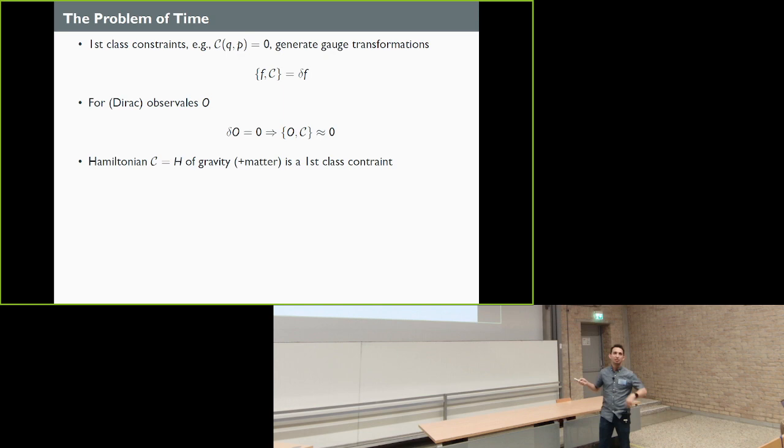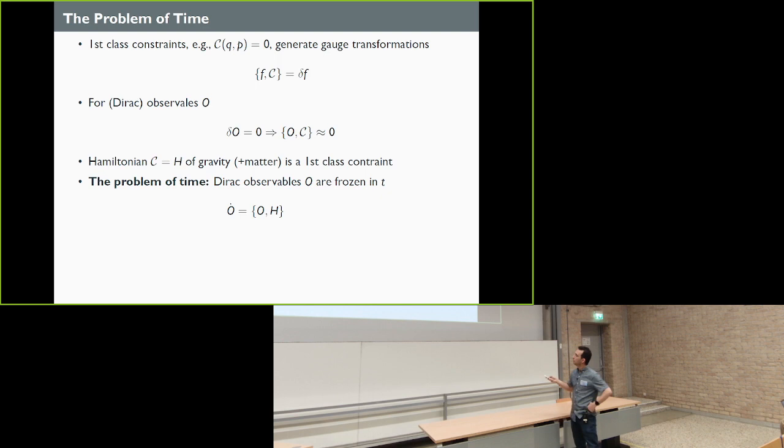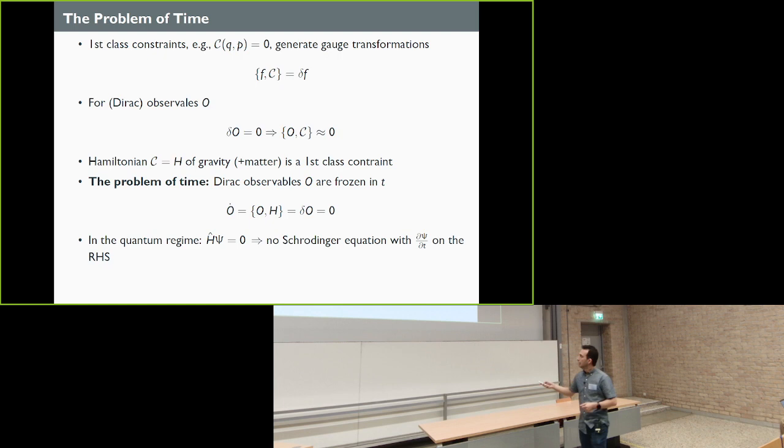We can also define Dirac observables which are naturally observables that don't change under gauge transformation. These are defined by their gauge transformation being equal to zero, so their Poisson bracket with the first class constraint is zero. Everything until now looks nice. Now the problem arises here. The Hamiltonian of the full gravity or the full gravity plus matter is a constraint or combination of first class constraints. So when you want to compute the time derivative of Dirac observables, their time evolution, because this is a first class constraint, is their gauge transformation. So time evolution is just gauge transformation. It's not physical. In other words, it's just zero. So all the Dirac observables are constants of motion. Everything is frozen. That's called the problem of time.